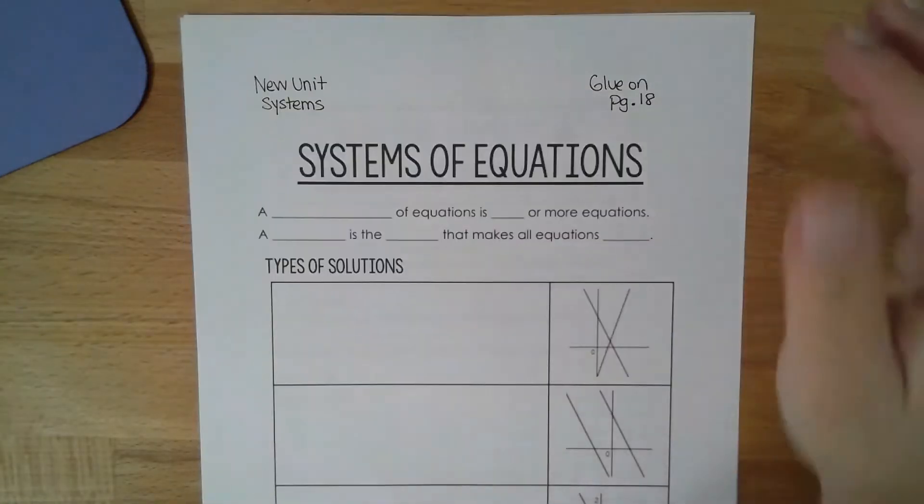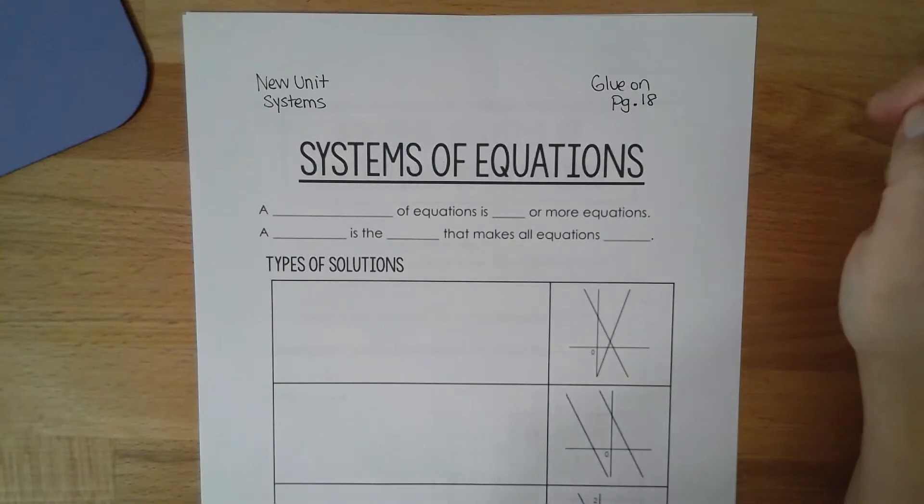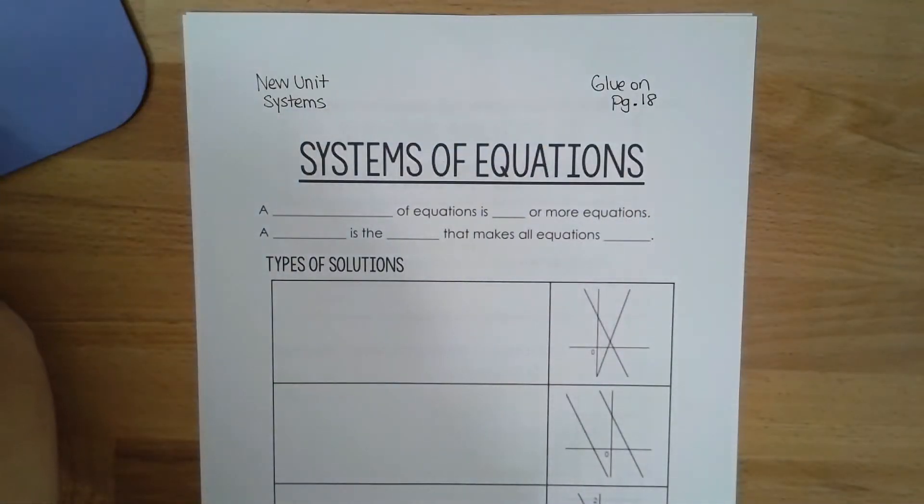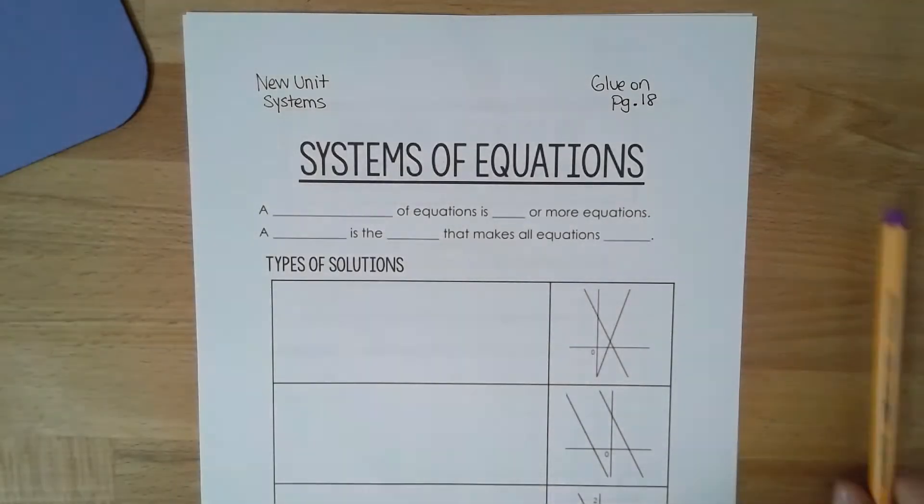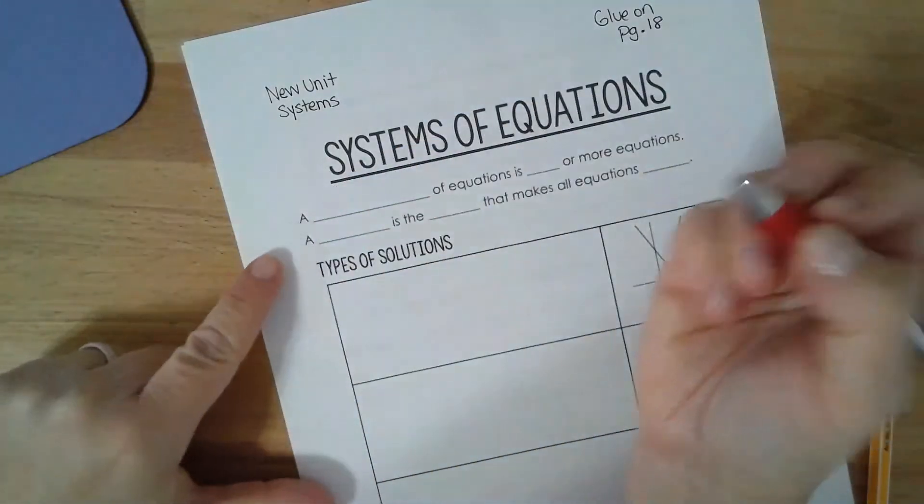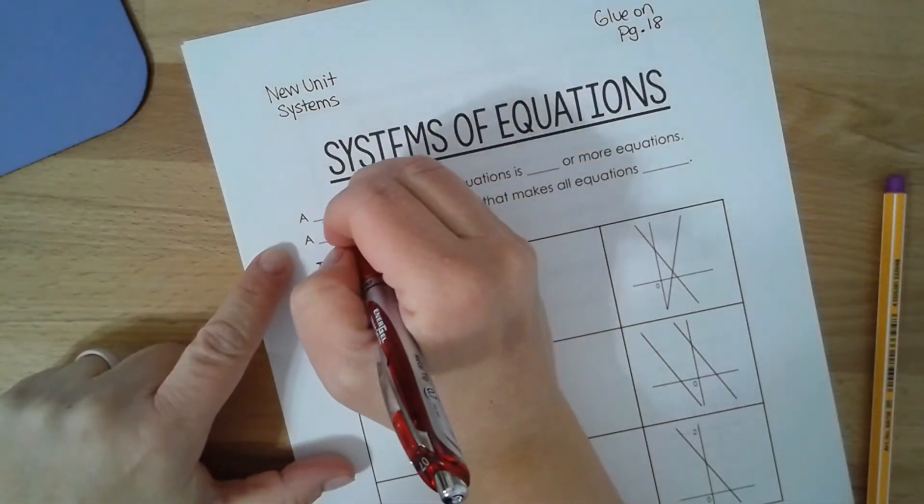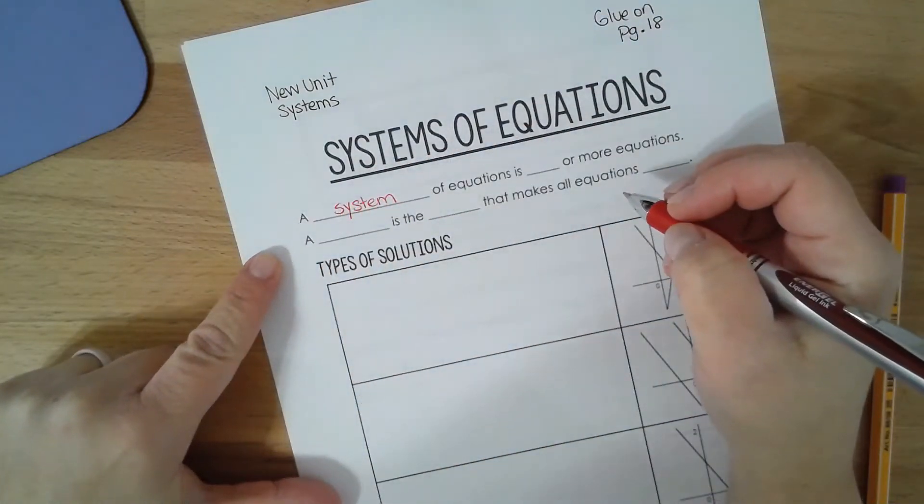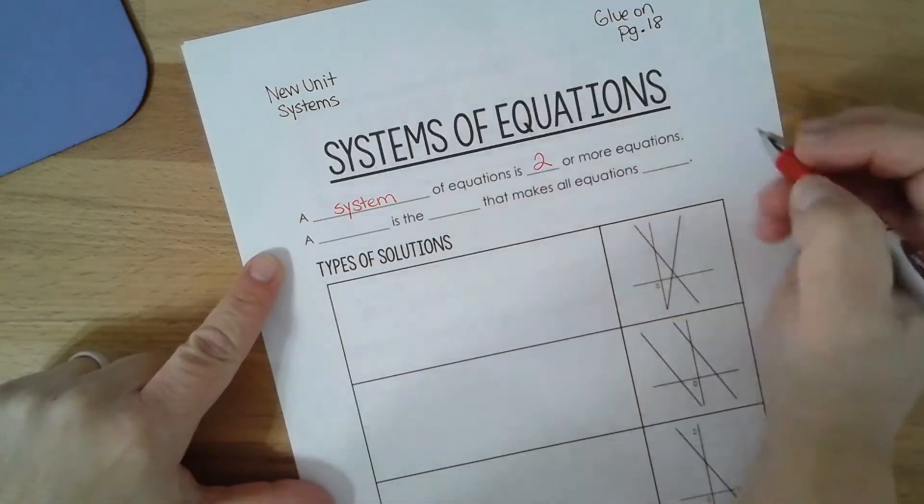Okay, hi everybody, so we're going to start our new unit today on systems. So what is a system? Let's start there. So a system of equations is two or more equations.